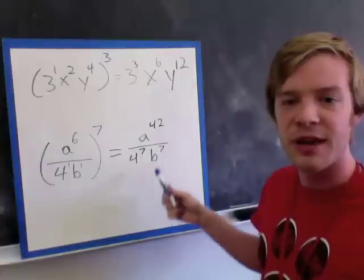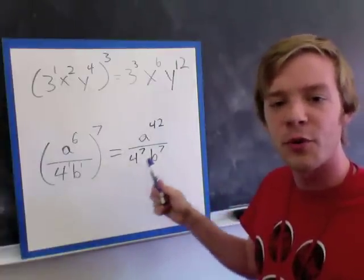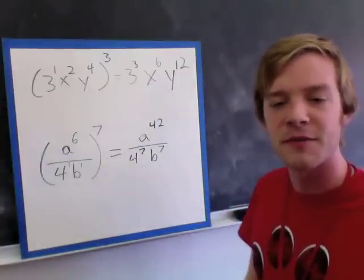So this is our answer here. We have a to the power of 42 over 4 to the power of 7 b to the power of 7.